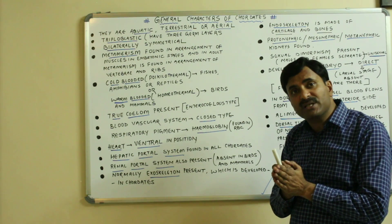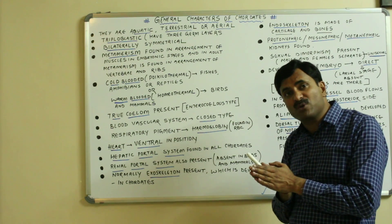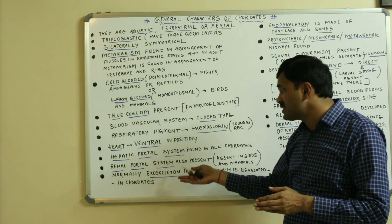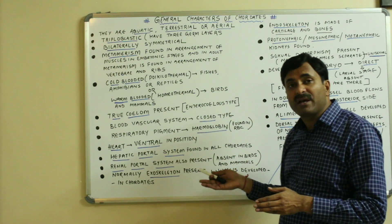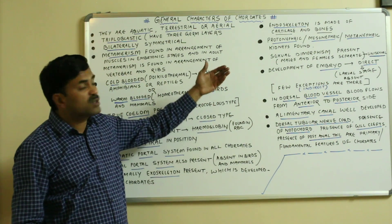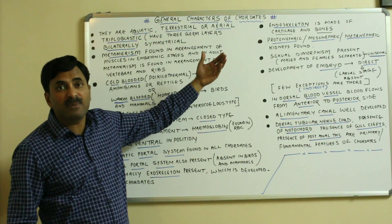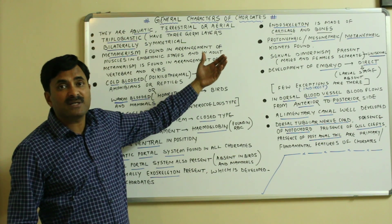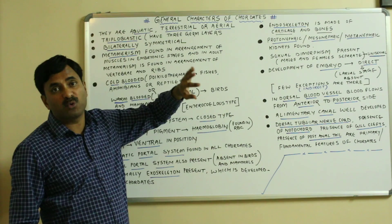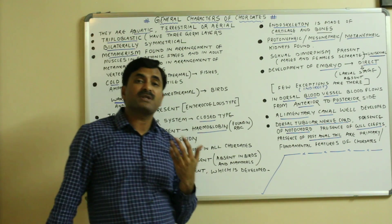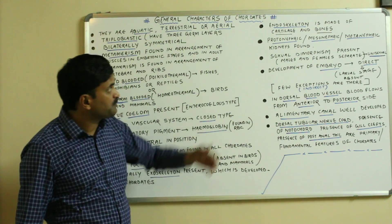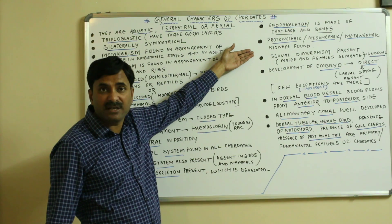Both types of skeletons are present in chordates — exoskeleton as well as endoskeleton. In maximum chordates, exoskeleton is present. The endoskeleton is also well developed and may be made up of cartilages or bones, so the endoskeleton may be cartilaginous or bony.